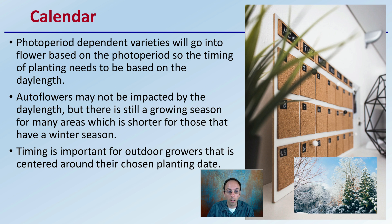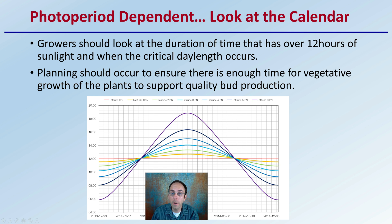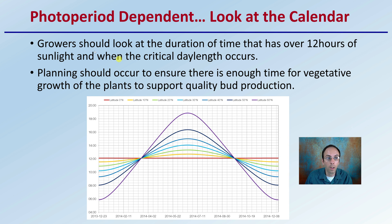Timing is important for outdoor growers and is centered around their chosen planting date — that's how you can modify what the plants will be exposed to. When looking at photoperiod dependence, take a look at the calendar. Growers should look at the duration of time with over 12 hours of sunlight and when the critical day length occurs. Planting should occur to ensure there's enough time for vegetative growth to support quality bud production.